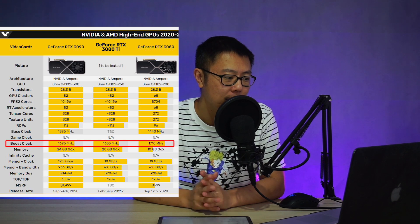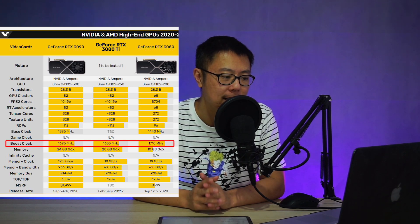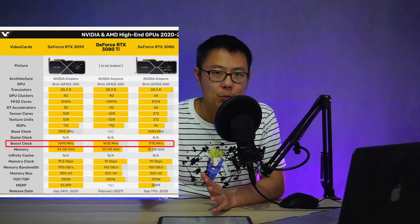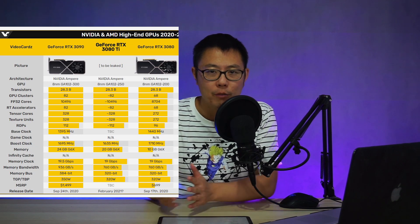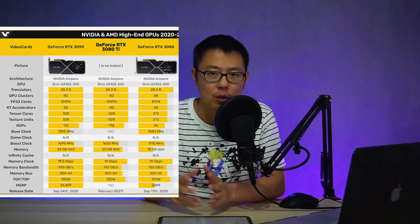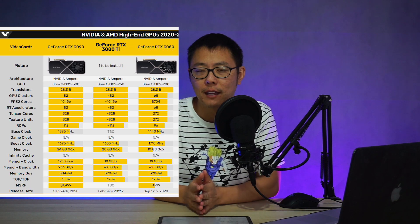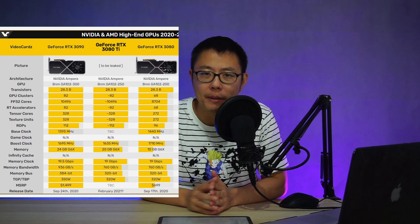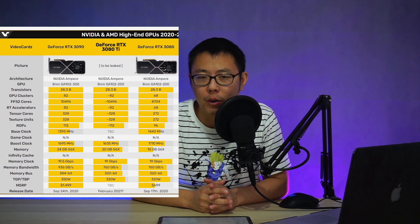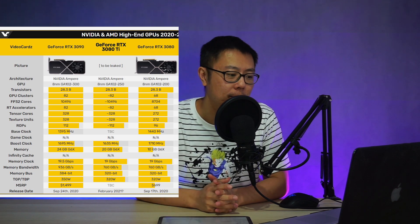Now where it's different is the boost clock. The 3080 Ti has 1635 megahertz and the boost clock for the 3090 is 1695 megahertz. I think that's where they're going to try to sell you the overclock variant of the 3080 Ti, because if they create a bigger gap, then it's easier to sell those overclock variants for a little bit more money.